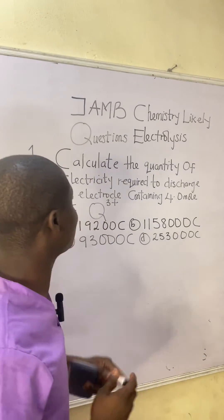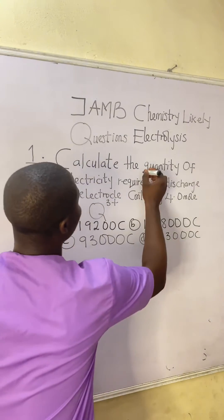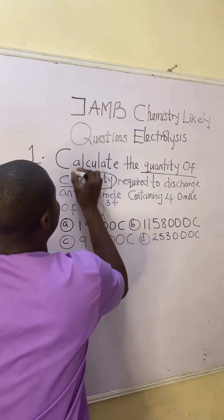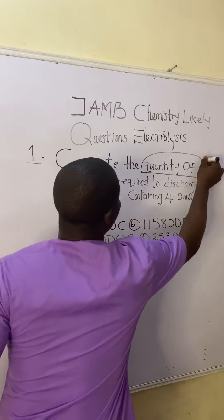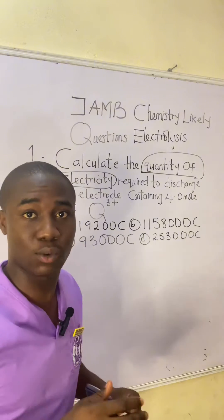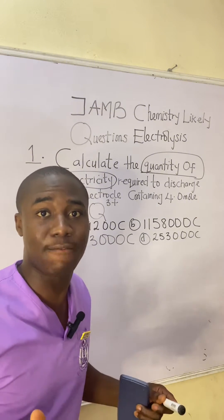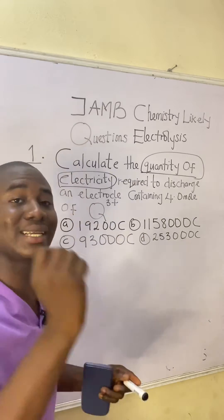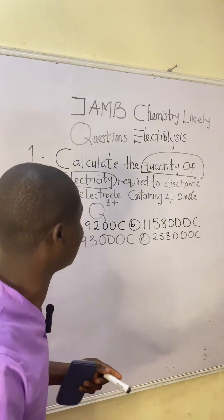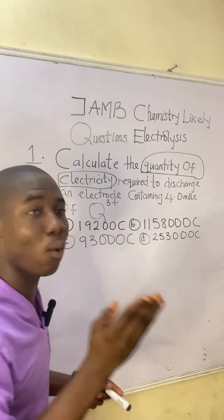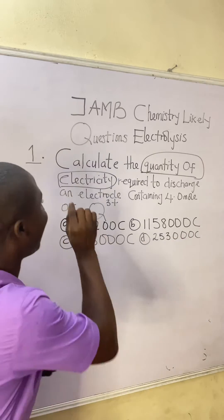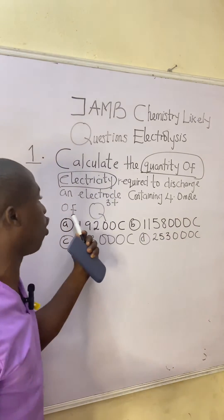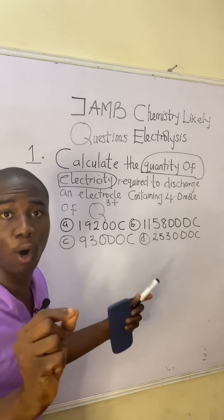The question says: calculate the quantity of electricity required to discharge an electrode containing 4 moles of Cu³⁺. When I hear this type of statement in a question, my mind goes to a particular formula which I'll be showing to you very soon.